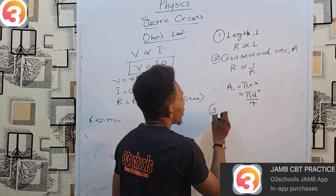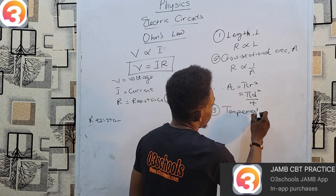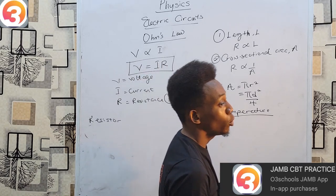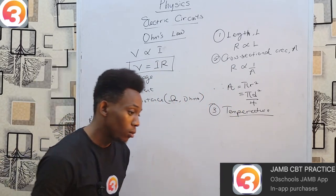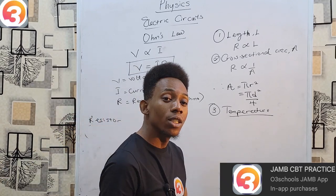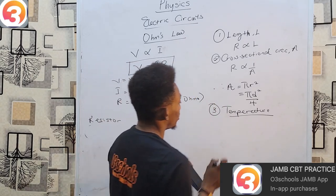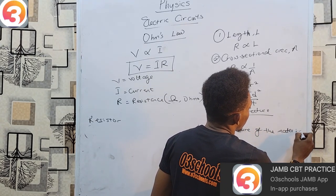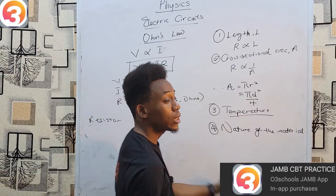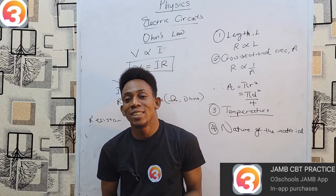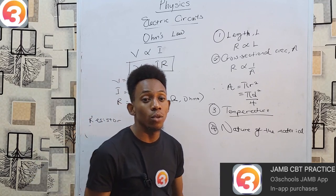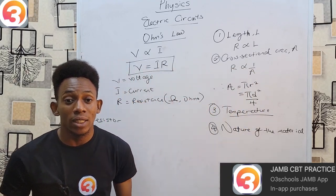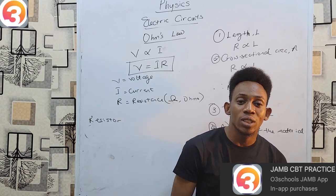The third factor is temperature. The behavior varies for different materials, but generally for metals, resistance increases with an increase in temperature and decreases with a decrease in temperature. The fourth factor is the nature of the material: different materials of the same length and area will not have the same resistance because there is an intrinsic property of each material that determines its resistance. This is why we classify materials broadly as conductors and insulators.